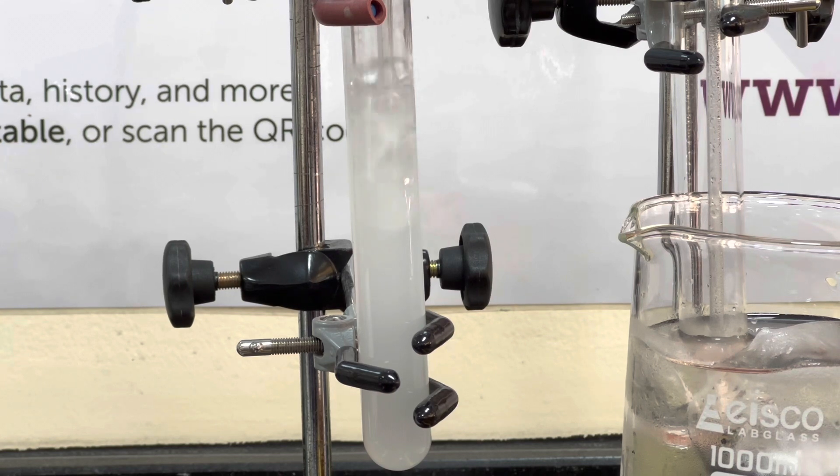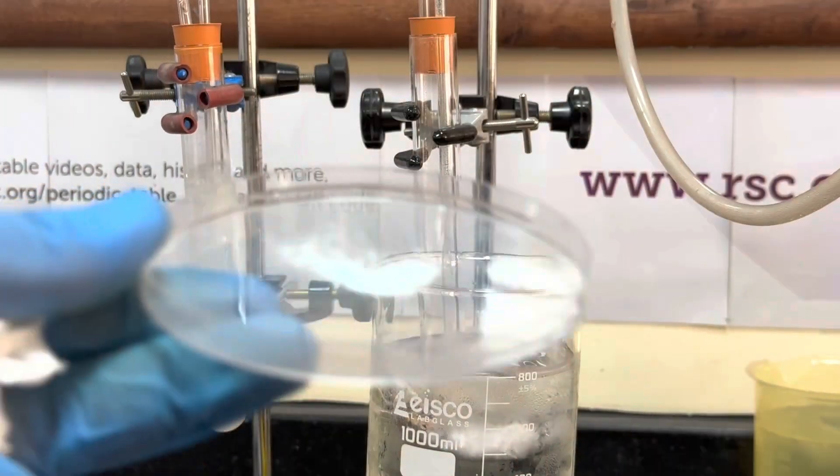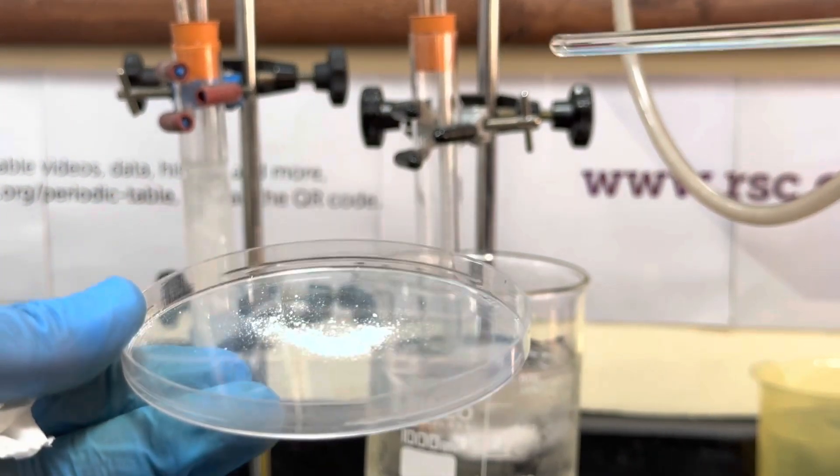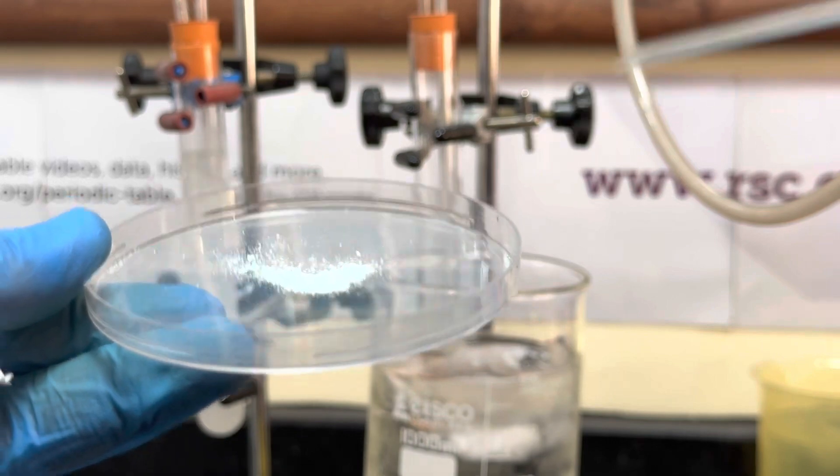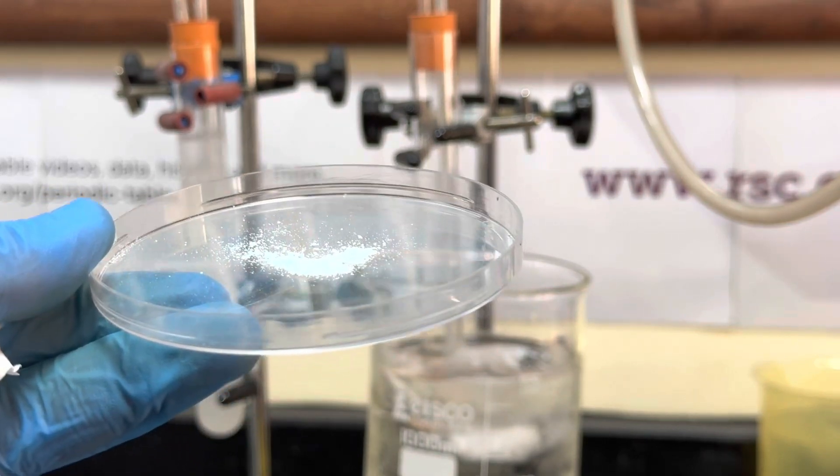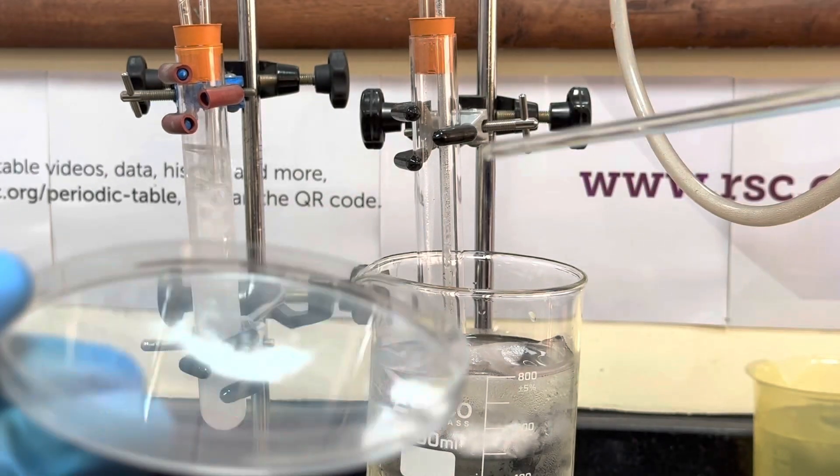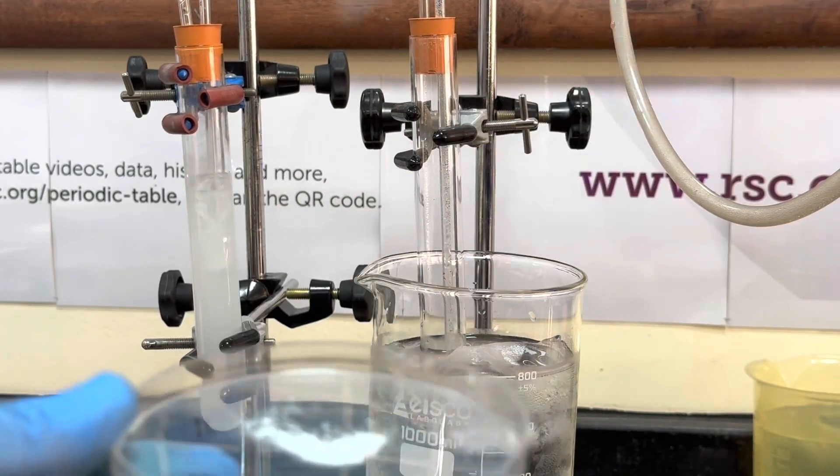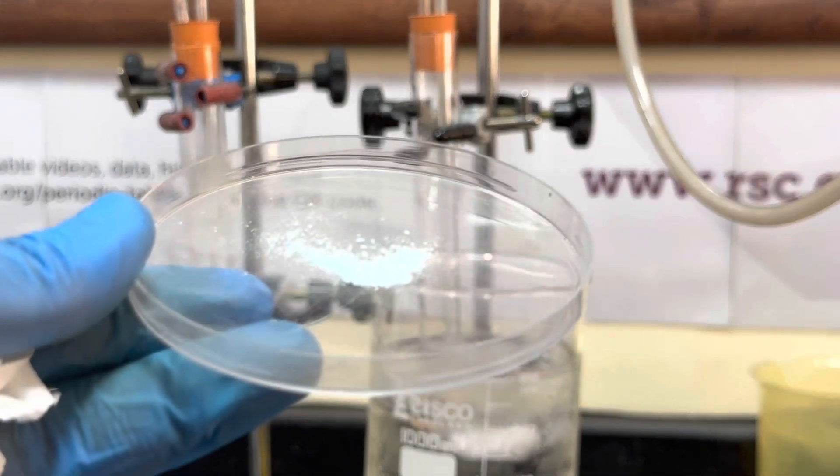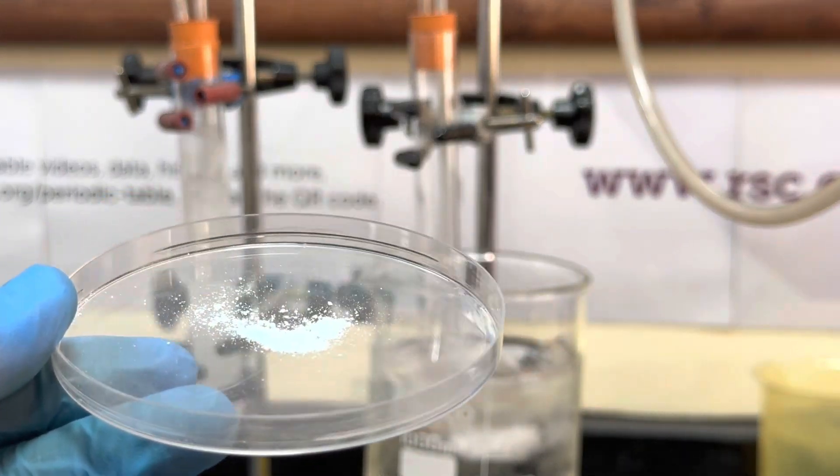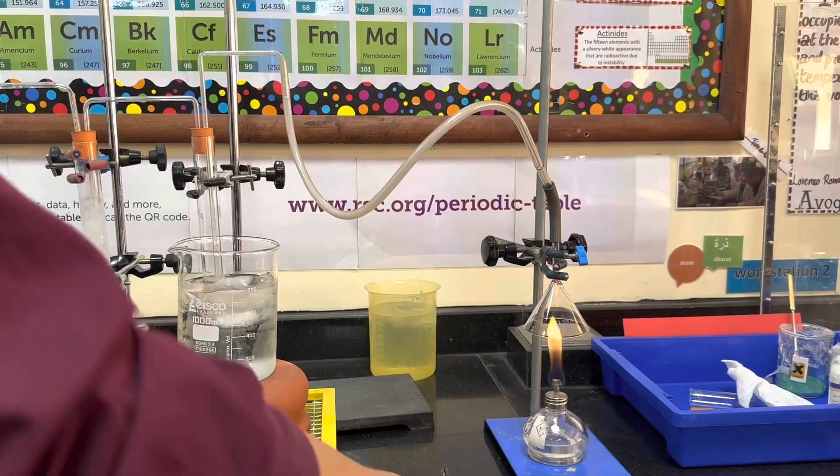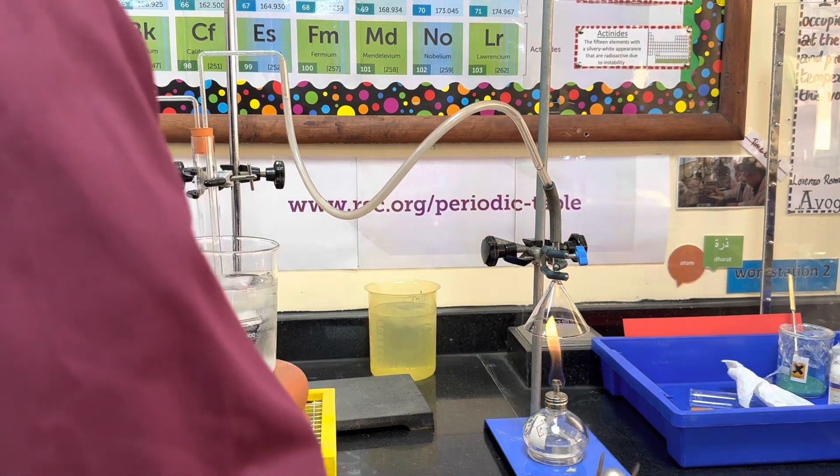So here, in advance, I have prepared some anhydrous copper(II) sulfate. It's quite easy to prepare - you just use a hot plate and crush up some hydrated copper sulfate, place it in a dish like a crystallizing dish, and evaporate the water away.